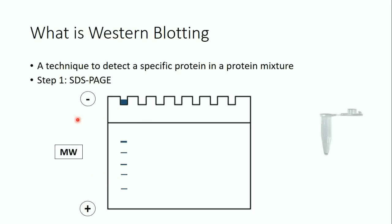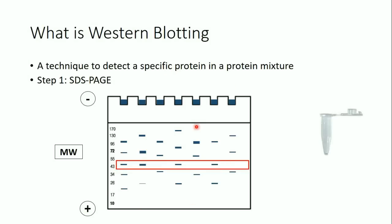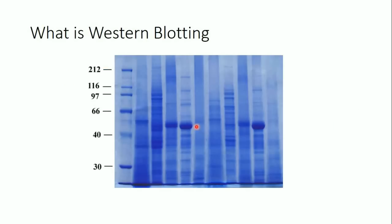What if I have several samples where the proteins are separated according to their molecular weight, but I'm interested in detecting a specific protein? Let's say the protein of my interest is 45 kilodaltons. As you can see, this protein doesn't exist in all samples, and it also exists in different amounts across samples. Let's be more realistic and see how this gel actually looks.